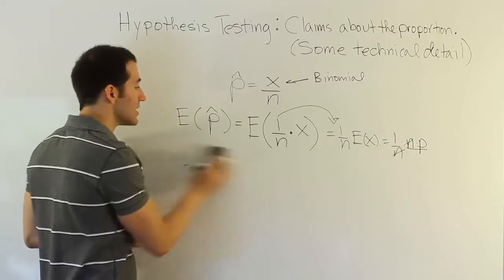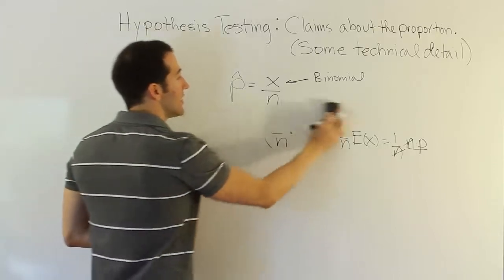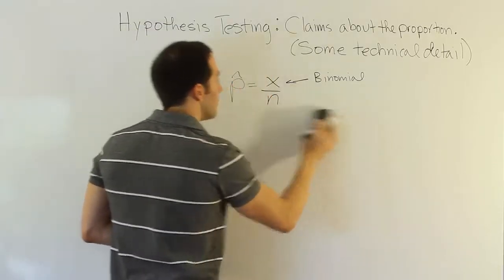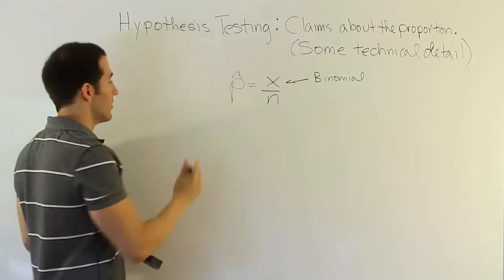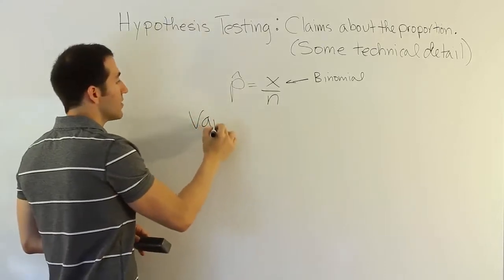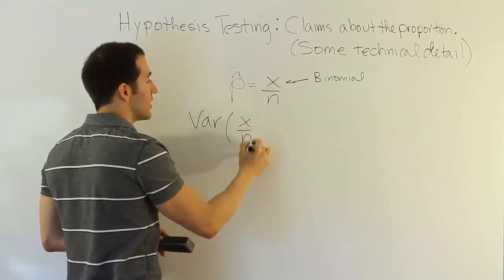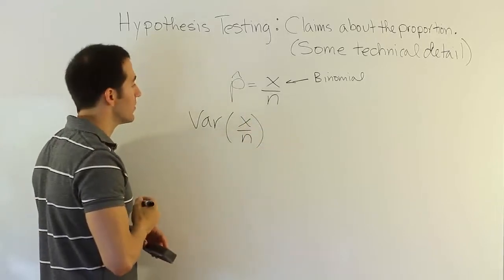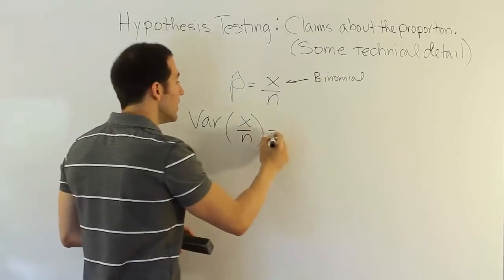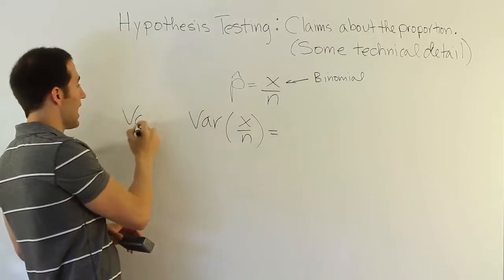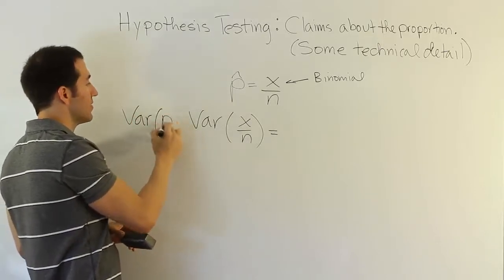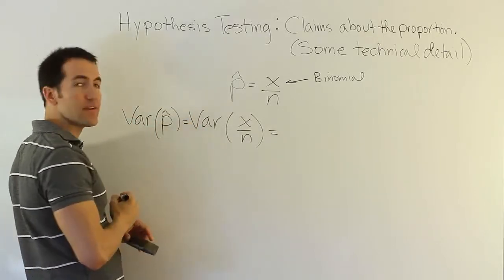Next thing we want to figure out is what's the standard error for p-hat? To get the standard error, we're actually going to figure out the variance. Let's calculate the variance for it. So the variance for x over n is our interest. Well, that's the same as the variance for p-hat. Let's try to figure that out.